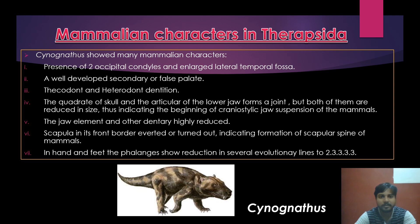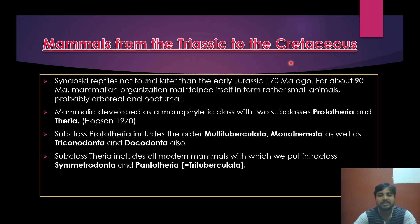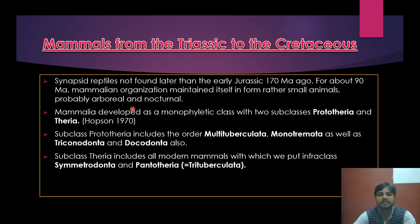From the Triassic to the Cretaceous, synapsid reptiles are not found later than the early Jurassic, about 170 million years ago. For about 90 million years, mammalian organization maintained itself in the form of small, probably arboreal nocturnal animals, because at that time dinosaurs and other reptiles were dominant and mammals could not grow large — they had to remain as small as possible.